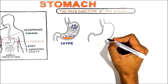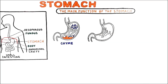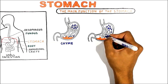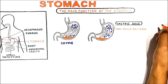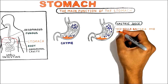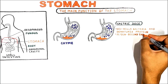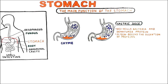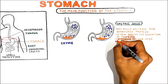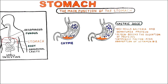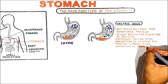Second, the gastric juice that the stomach secretes to help digest the food is made up of many things. It contains hydrochloric acid, which kills bacteria and denatures proteins; pepsin, which begins the digestion of proteins; the intrinsic factor that aids absorption of vitamin B12; and gastric lipase, which aids digestion of triglycerides.